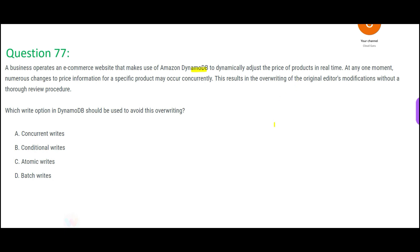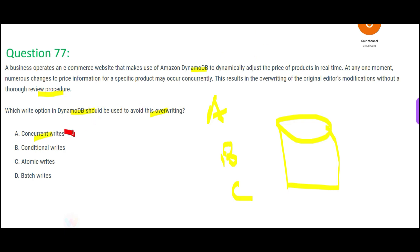The problem is: you have one database and three users — Buddy A, Buddy B, and Buddy C — all updating at their will. There is no control, no governance. We want to introduce a review procedure. Which feature of DynamoDB should we use? Concurrent writes will not solve it, because the concurrency is already happening — A, B, and C are all writing at the same time.